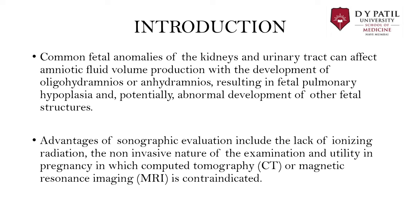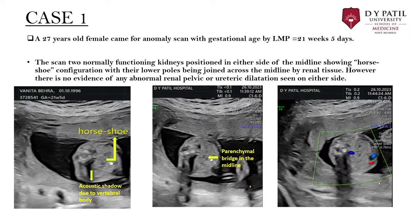We'll be focusing on two important cases. In the first case, a 27-year-old female came for a routine scan with gestational age by LMP being 21 weeks and 5 days. The scan shows two normally functioning kidneys positioned on either side of the midline showing horseshoe configuration, with their lower poles joined across the midline by renal tissue. There is no evidence of any abnormal renal pelvic or ureteric dilatation seen on either side.